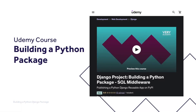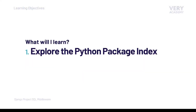This tutorial is part of our building a Python package course, where we learn how to build, test, and automate deployment of a Python Django middleware package to the Python Package Index. You can watch the entire course uninterrupted, ad-free, and access updated tutorial source code and other resources from our Udemy course. Alternatively, you can access the course via our YouTube playlist. Links to both can be found in the video description.